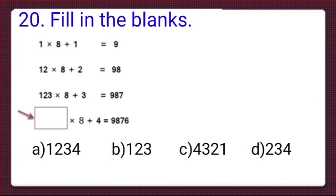Look carefully kids — this pattern will help you solve the question. We have 1, then 12, then 123. Now we will have 4 digits: 1, 2, 3, and 4 — so 1234 will be filled here. As per this pattern, 1234 is the correct number to be filled in this box, and it is there in option A. Option A has the right answer and we will put a tick mark at option A.